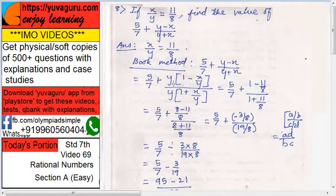y into 1 plus x upon y. Now, y y gets cancelled. So, 1 minus x upon y upon 1 plus x upon y. 5 upon 7 as it is.